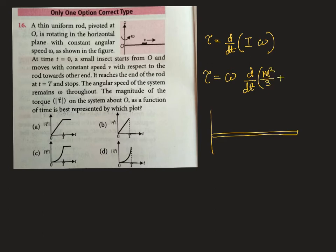That's constant, plus small m. What is the distance? vt. So small m into v square t square.